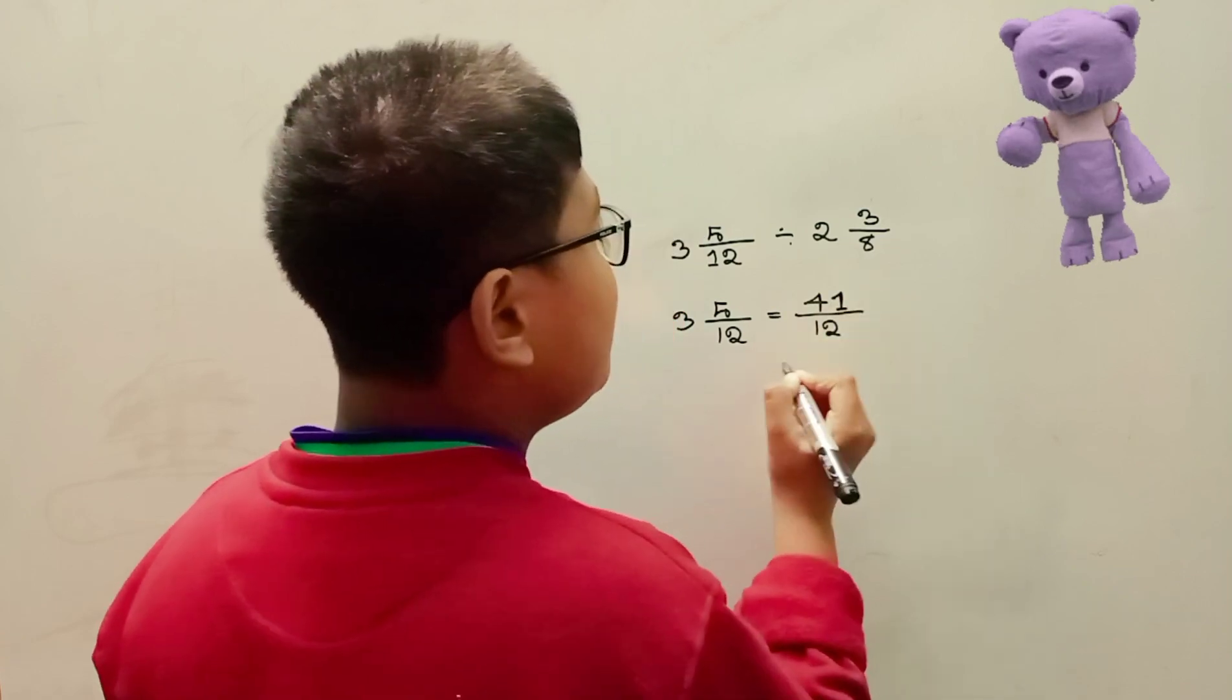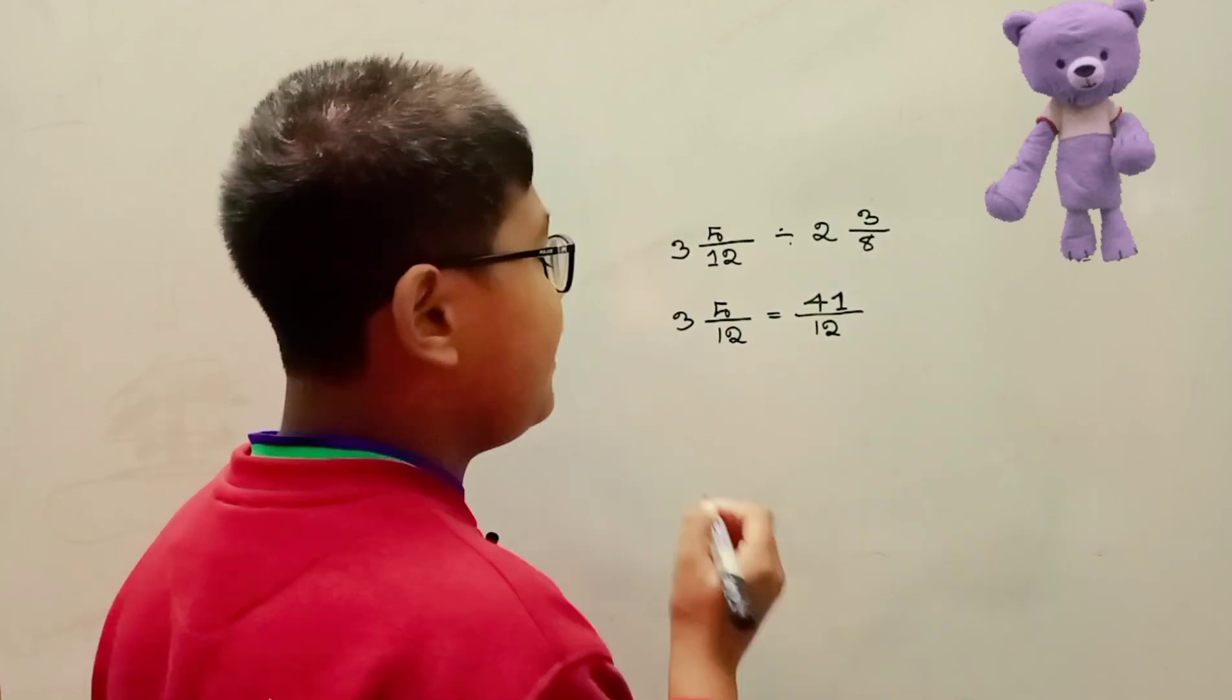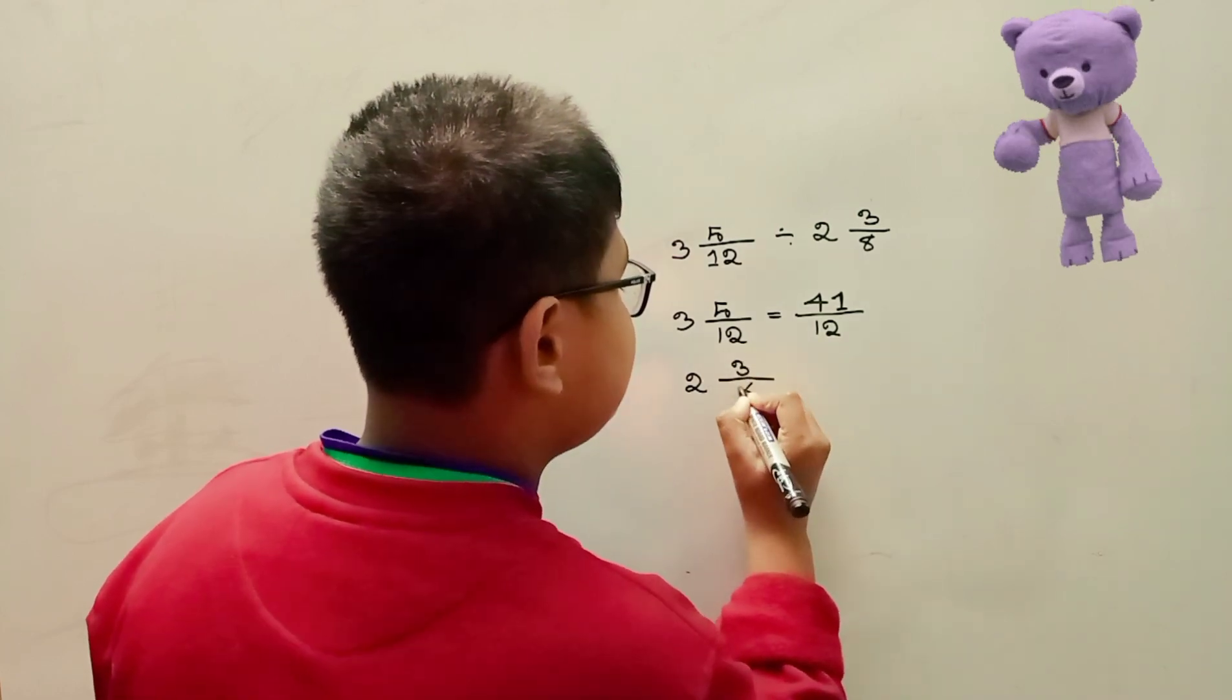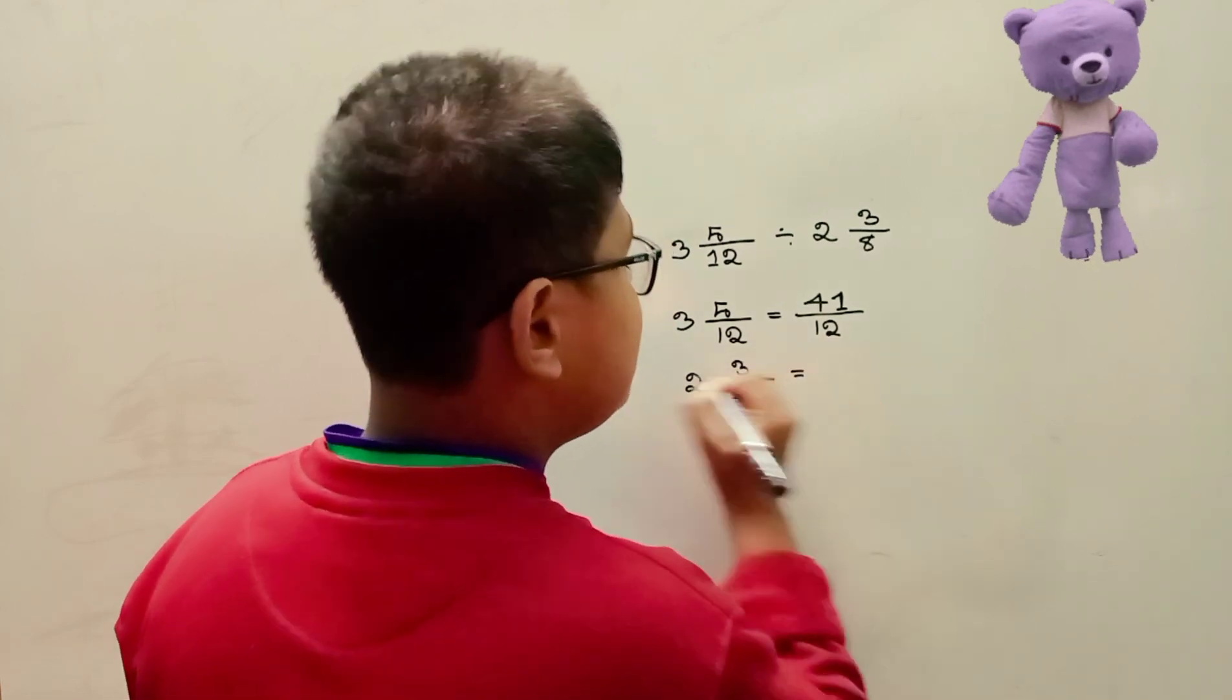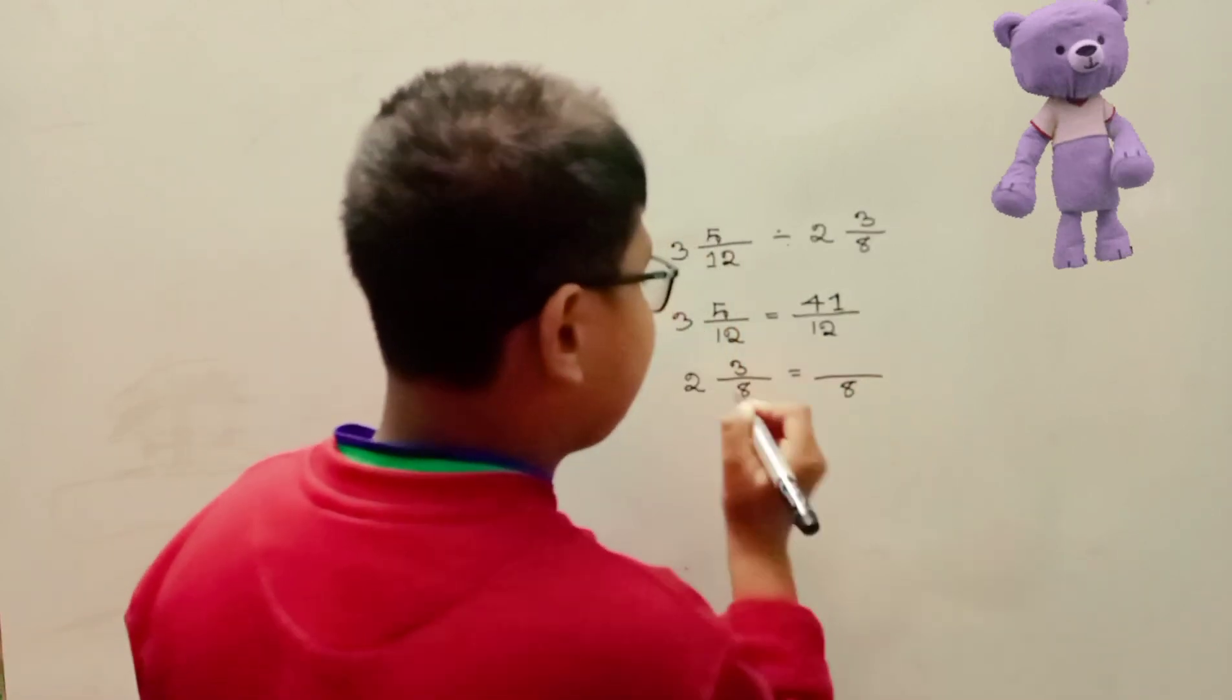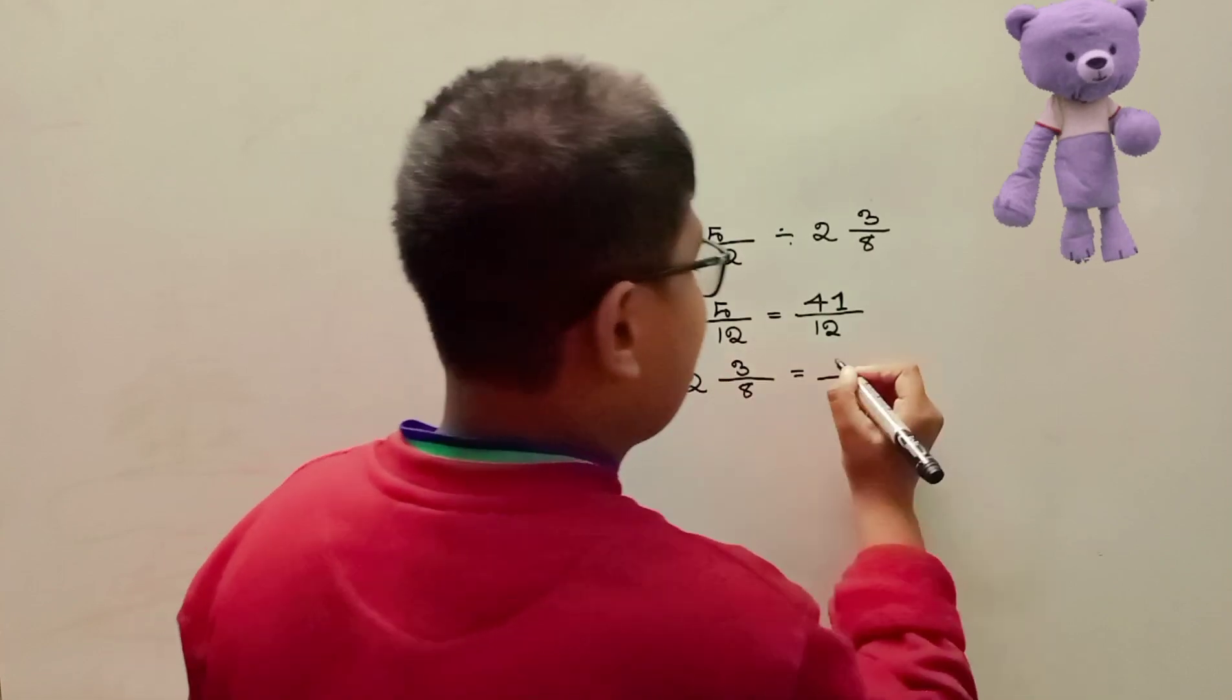Again, 2 whole 3 over 8 equals 8 times 2 is 16. 16 plus 3 is 19, so 19 over 8.